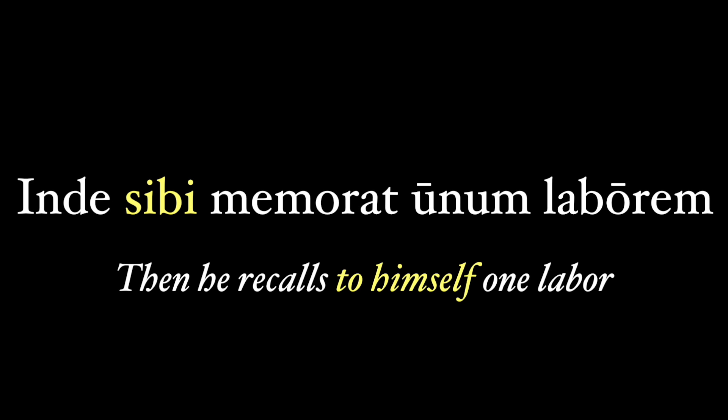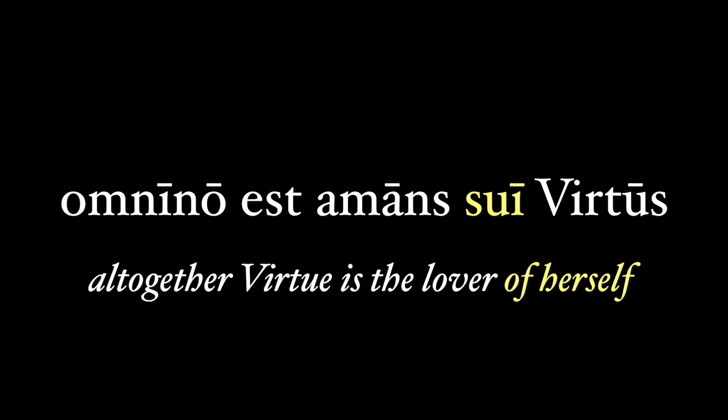Here's a dative example from Aeneas: 'inde sibi memorat unum laborem' — then he recalls to himself one labor. The 'to himself' is the same guy as the subject. Cicero suggests that virtue loves herself in this phrase from De amicitia: 'omnino est amans sui virtus' — literally, altogether, virtue is the lover of herself.